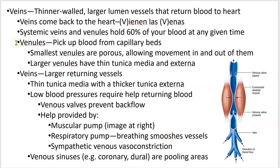Veins start small as venules, just like arteries start small as arterioles. Venules pick up blood from the capillary beds and are porous, meaning fluids can leak in and out — there's lots of leakage at the arterial end and absorption at the venous end. Venules have all three tunics in larger ones and only the first two in smaller ones. Proper named veins have a thin tunica media, very low blood pressure, and interestingly, veins have valves. As blood gets pushed upward — since many veins lie below the heart — valves close to prevent backflow back down the vein.